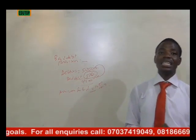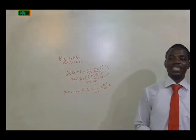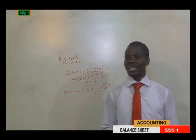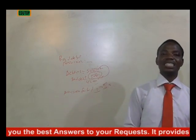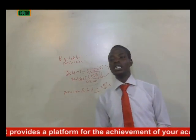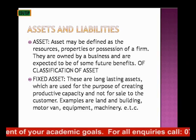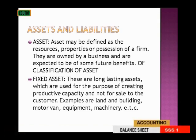Topic six covers the balance sheet. A balance sheet is a statement drawn up at the end of the financial period showing the various assets and liabilities in a well-arranged form. It is a statement, not an account, so it does not follow the double entry principle — it is simply a statement showing the financial affairs of the business at the end of the period.